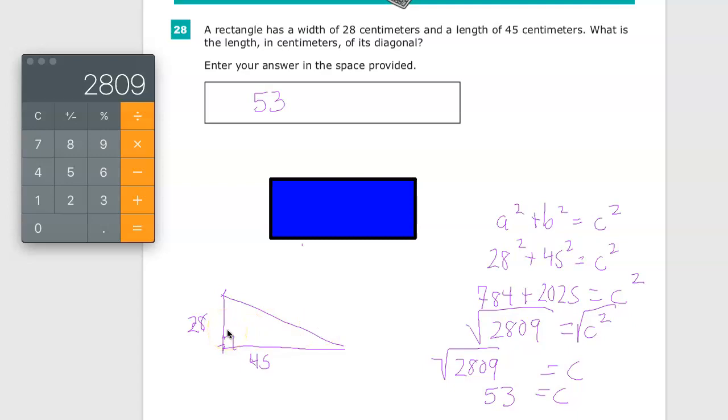So for this question, it helped me that number one, I drew the picture so I could see what was going on. Number two, when I realized I was working with the right triangle, I immediately thought, well, do I have two sides? And the answer to that question was yes. So I wrote down the Pythagorean theorem. Number three, I identified A and B and C incidentally, and substituted my values in appropriately. And then I solved remembering to always end with a square root when you do the Pythagorean theorem, it can get you to the correct answer.